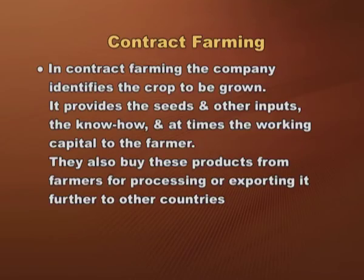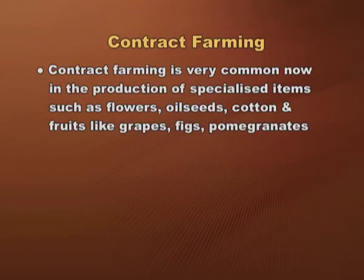What is contract farming? In contract farming, the company identifies the crop to be grown. It provides the seeds and other inputs, the know-how, and at times even the working capital to the farmer. The company also buys these products from the farmers for processing or exporting to other countries. Contract farming is now very common in the production of specialised items such as flowers, oilseeds, cotton, and fruits like grapes, figs, and pomegranates.